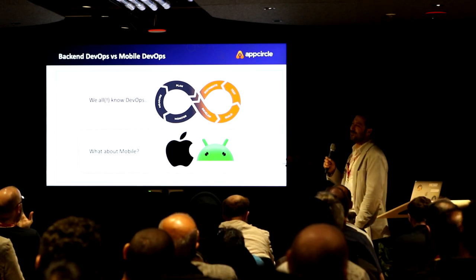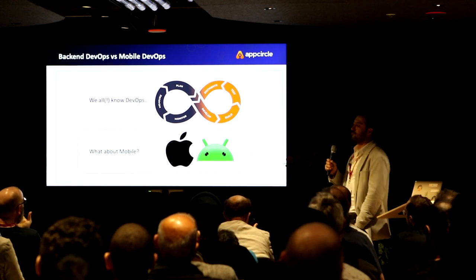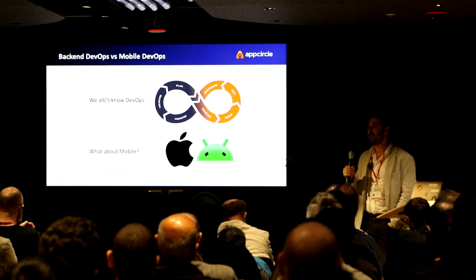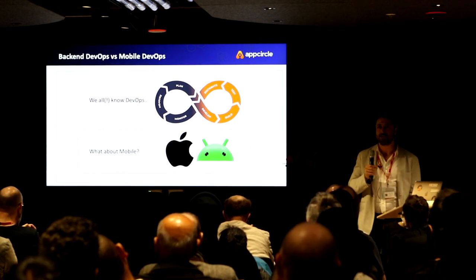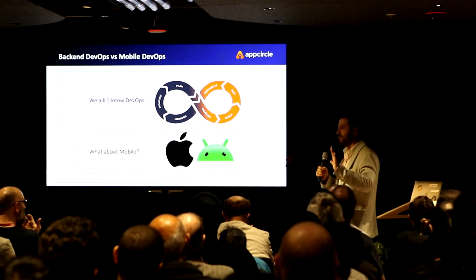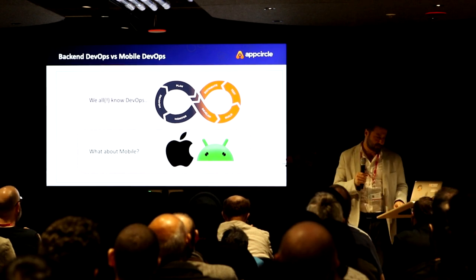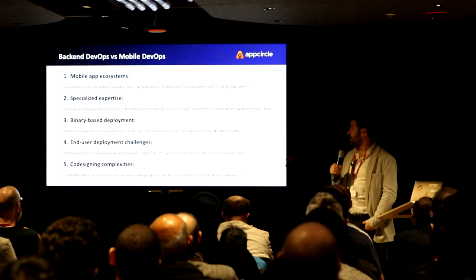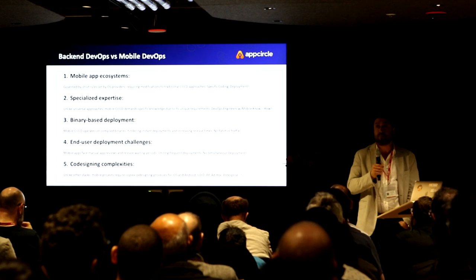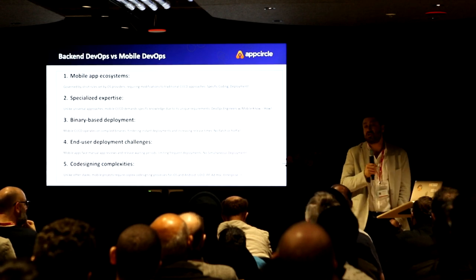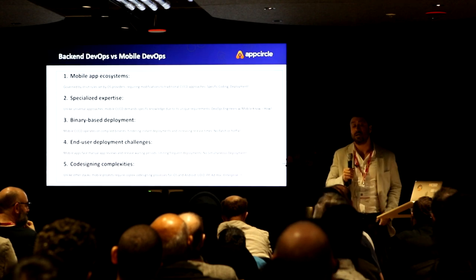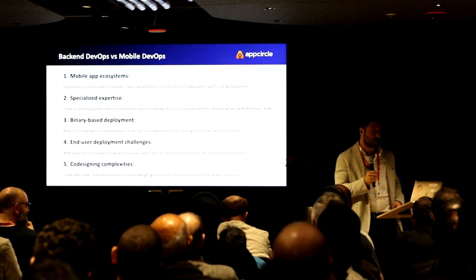We all know DevOps, right? So what about the mobile? When it comes to mobile applications — iOS applications or Android applications — are we pretty sure that we all know about the facts of the mobile world? Let's see that. So what could be the possible differences between the mobile DevOps and the back-end DevOps, or web DevOps, whatever you call it — we just call it conventional DevOps. So what does it mean when it comes to the mobile?